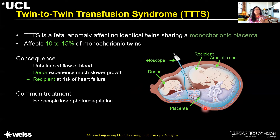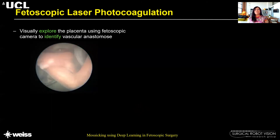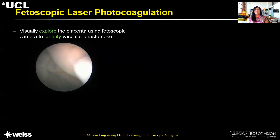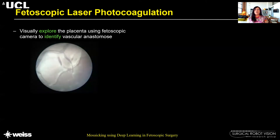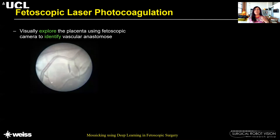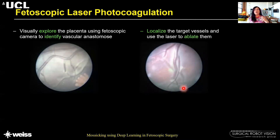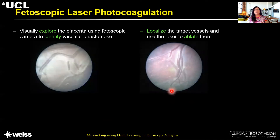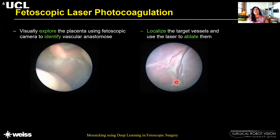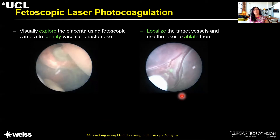Fetoscopic laser photocoagulation is used for treating this condition. During this procedure, the surgeon first visually explores the placenta surface using the fetoscopic camera to identify the vascular anastomosis sites. As the field of view is quite narrow, the surgeon builds a mental map of the surface of the placenta and then revisits these vascular anastomosis sites, localizes the target vessels, and uses a laser to ablate them, as you can see in the video on the right-hand side.